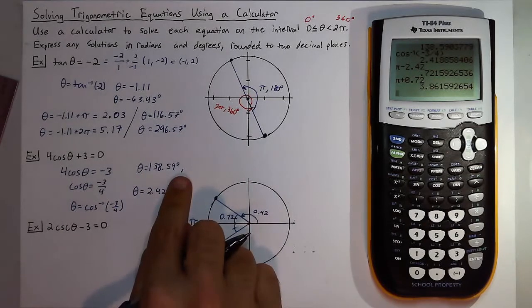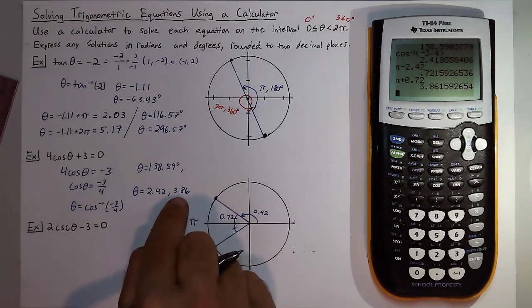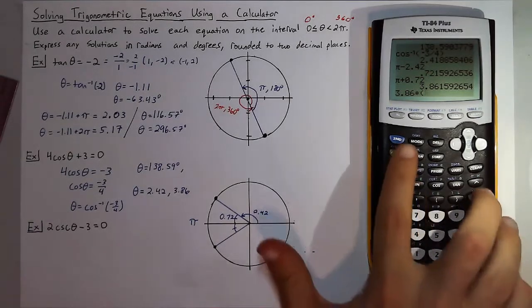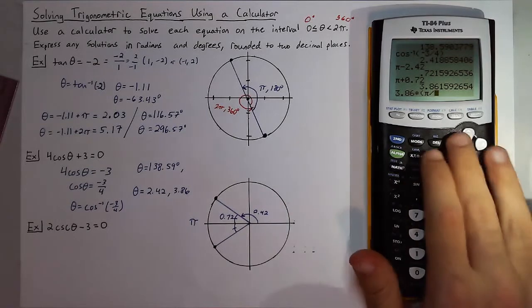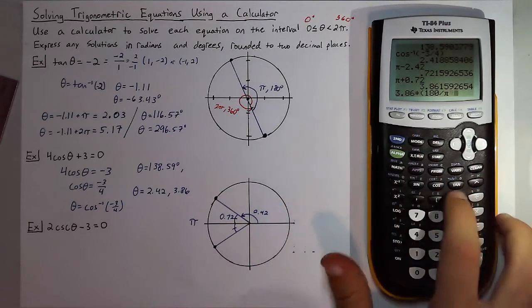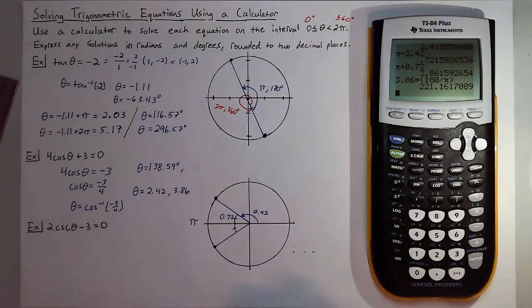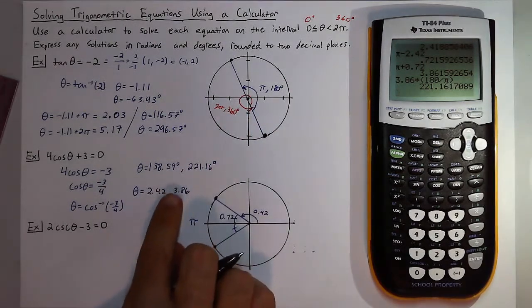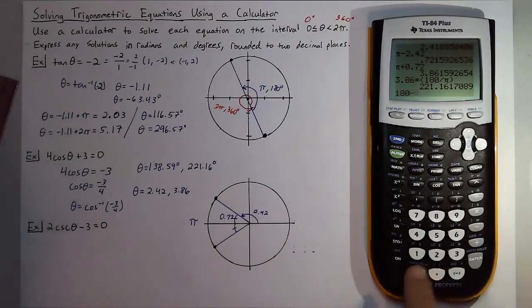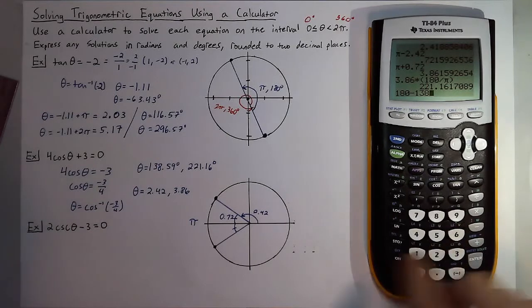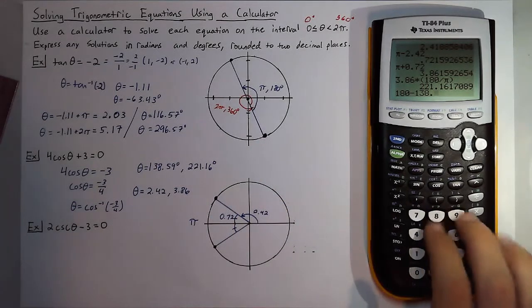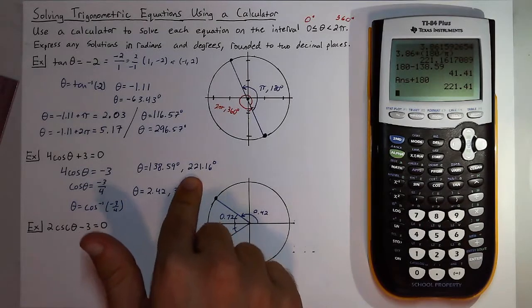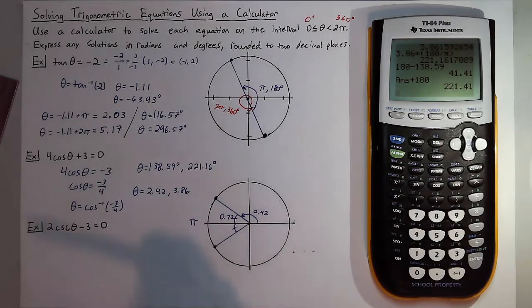I can do something very similar with my degree answer, but if I want to save some time, since I found one already I can just do 3.86 times the conversion, 180 divided by pi, and that's the conversion from radians to degrees. I'll get my degree angle to be 221.16, which I could have also done in a very similar fashion. If I would have done 180 minus 138 just to find that angle right there between its upper angle and the x-axis, I'll get 41.41, add that to 180 and again 221.41, which is relatively close. I did have to round here but it is another way to get to that answer.